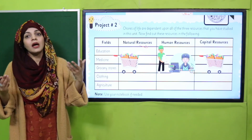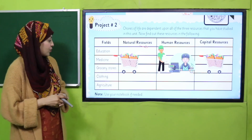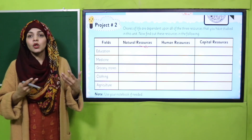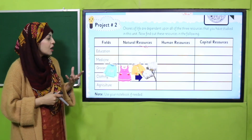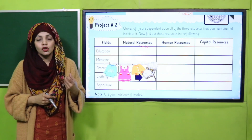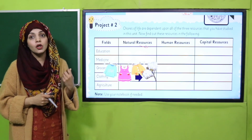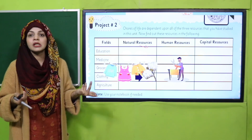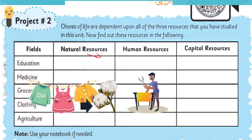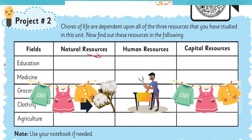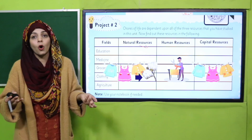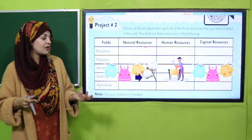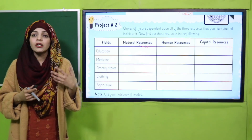Next, clothing. Your clothes are made from cotton, so cotton is the natural resource. The human resource is the tailor who makes your clothes. The capital resources are the clothes that you wear — different kinds of clothes like sweaters, shirts, and pants — these are all capital resources.